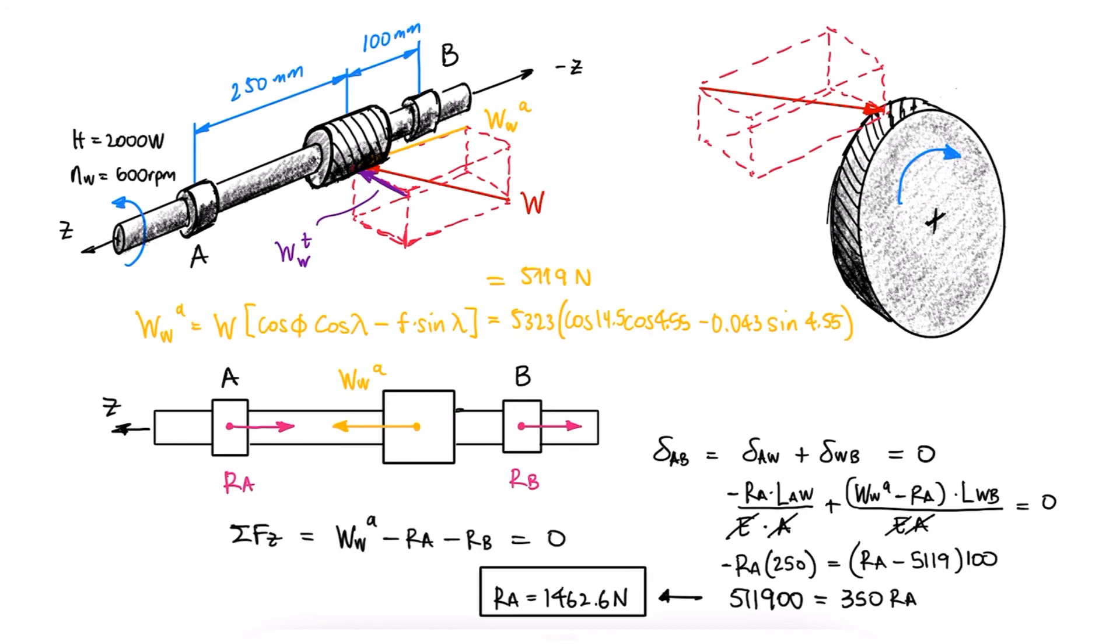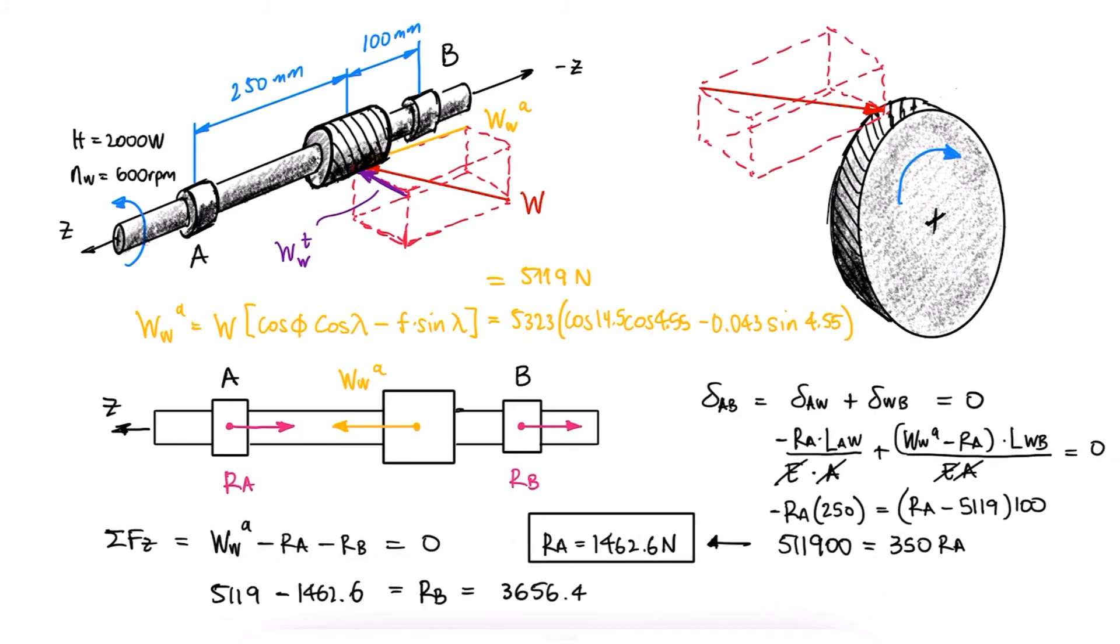With this value, we go back to the sum of forces in the z-direction to find the axial reaction at bearing B. These axial reaction forces will be very important to calculate the equivalent load of a combined radial and thrust loading at the bearings.